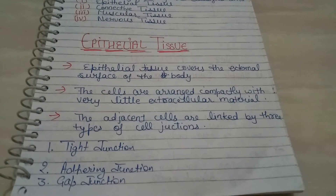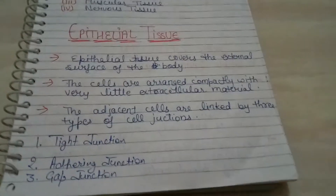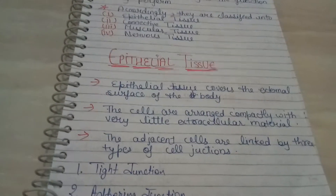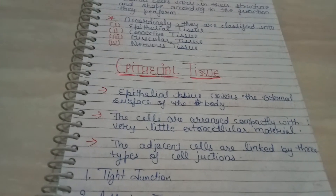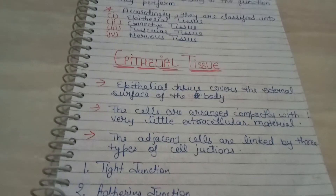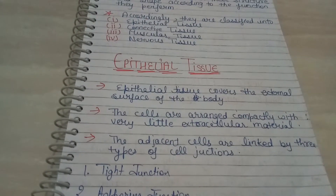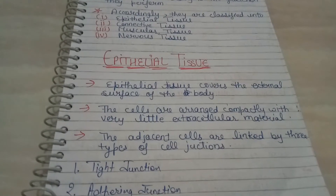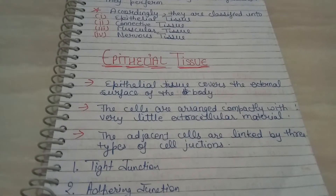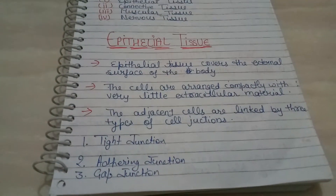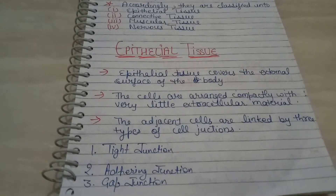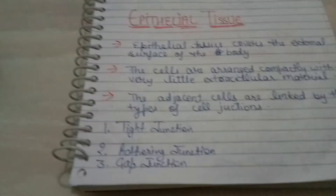Third is gap junction. Gap junctions facilitate the cells to communicate with each other by connecting the cytoplasm of adjoining cells for rapid transfer of ions, small molecules, and sometimes big molecules.